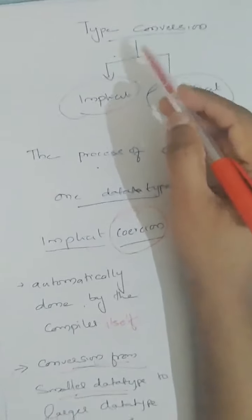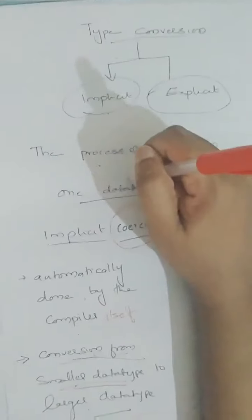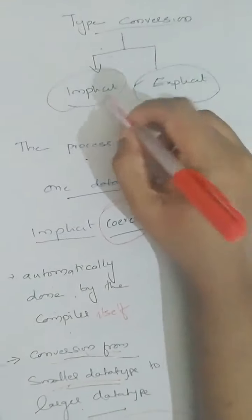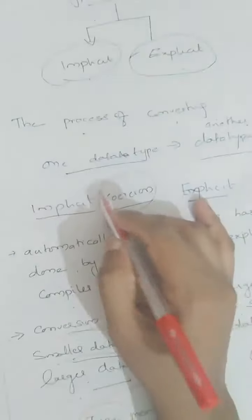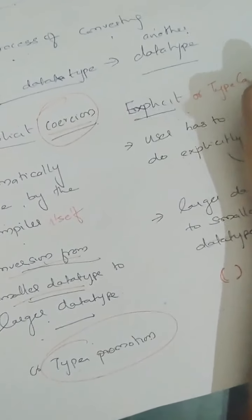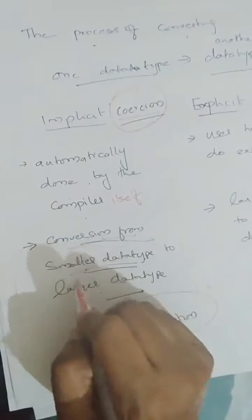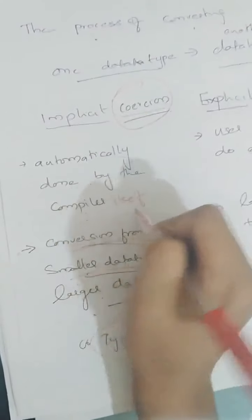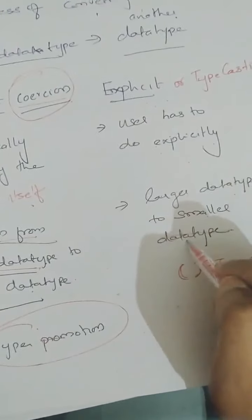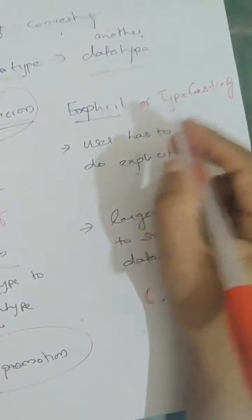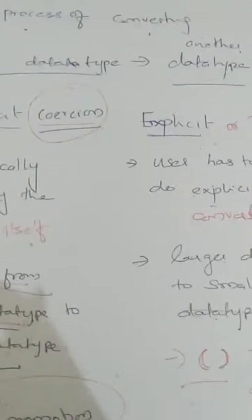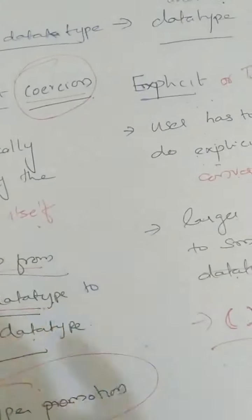So type conversion means conversion of one data type into another. It is of two types: implicit conversion and explicit conversion. Implicit conversion is also known as coercion or type promotion. Explicit conversion is also known as typecasting. Implicit is smaller to larger done by the compiler; explicit is larger to smaller done by the user using the typecast operator.